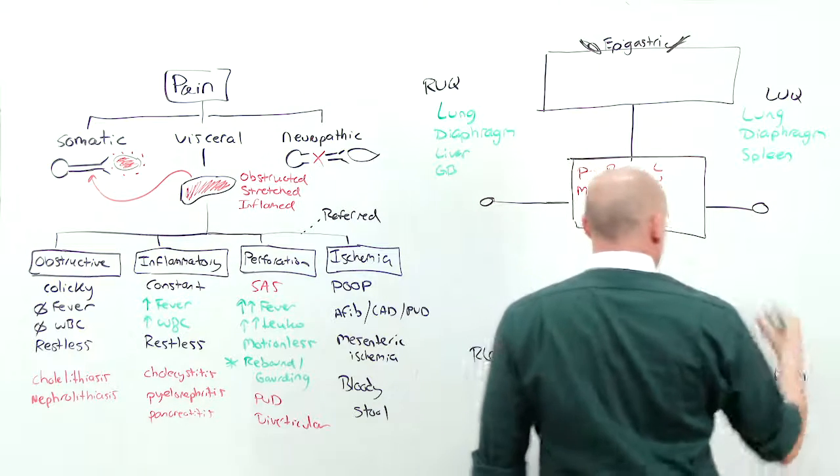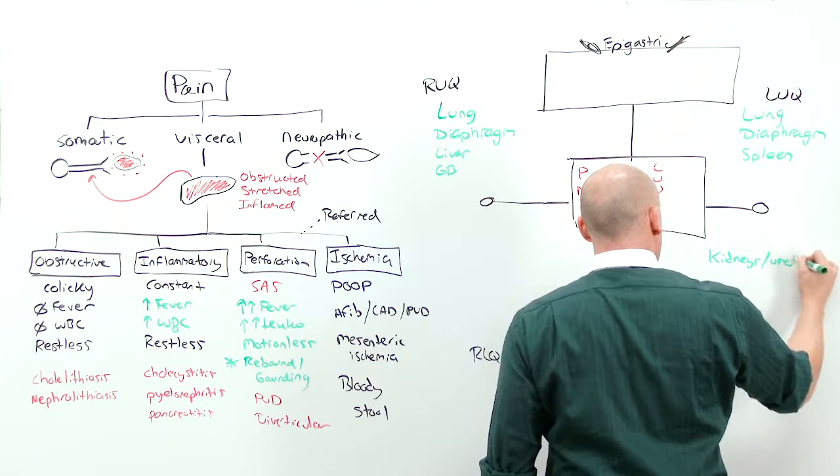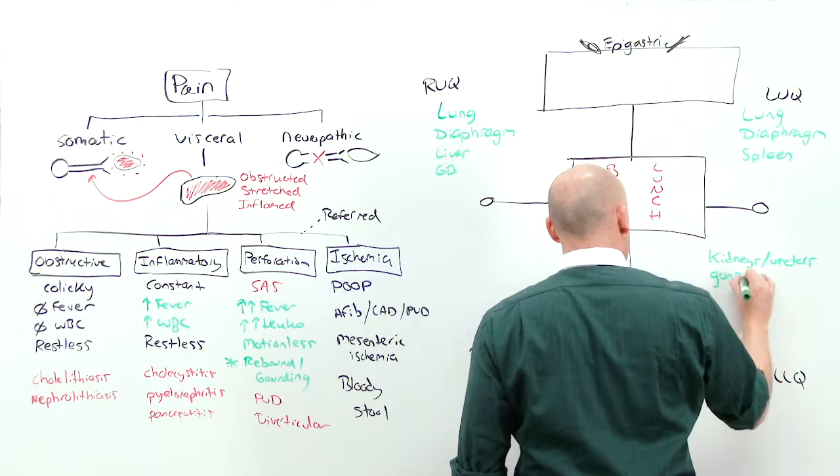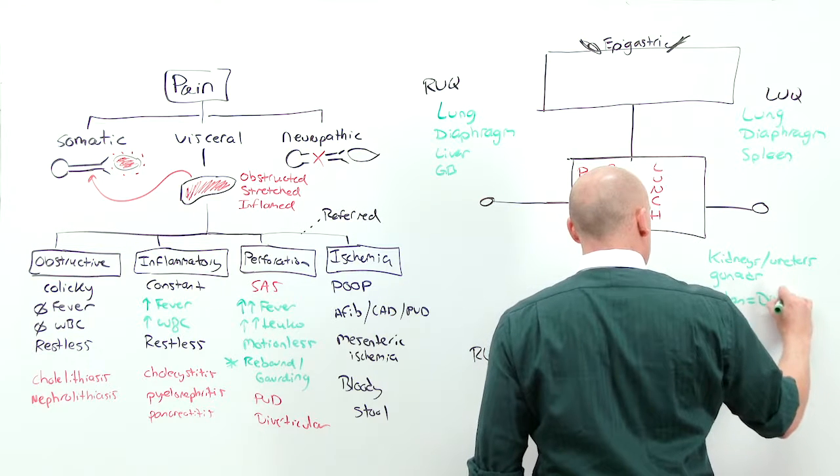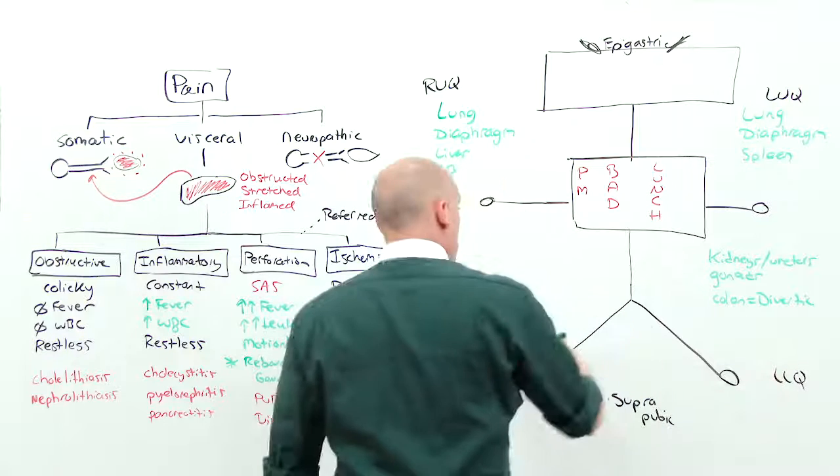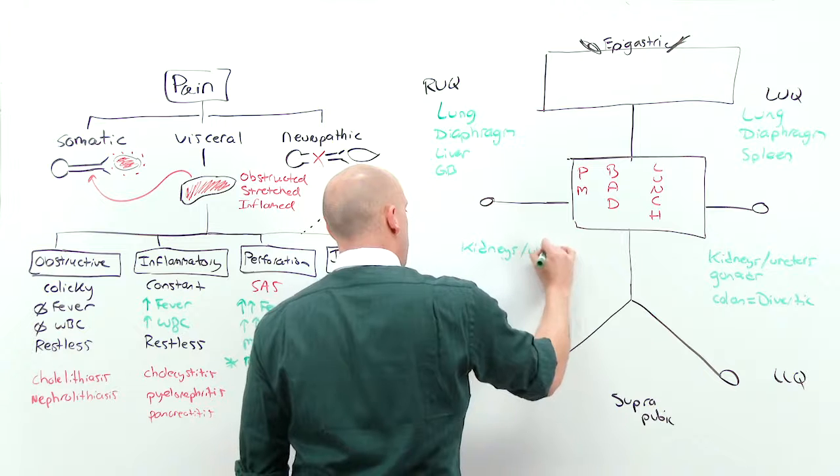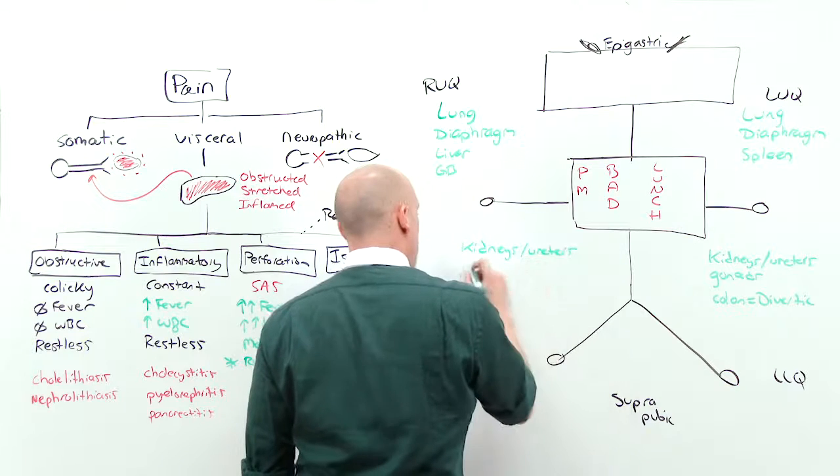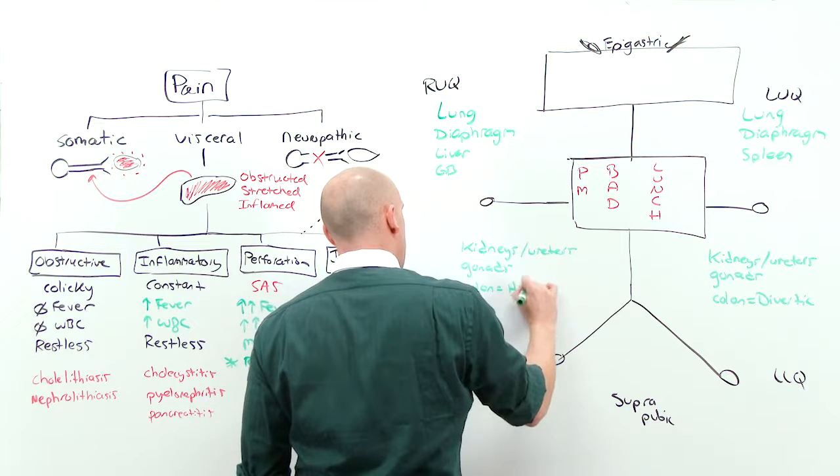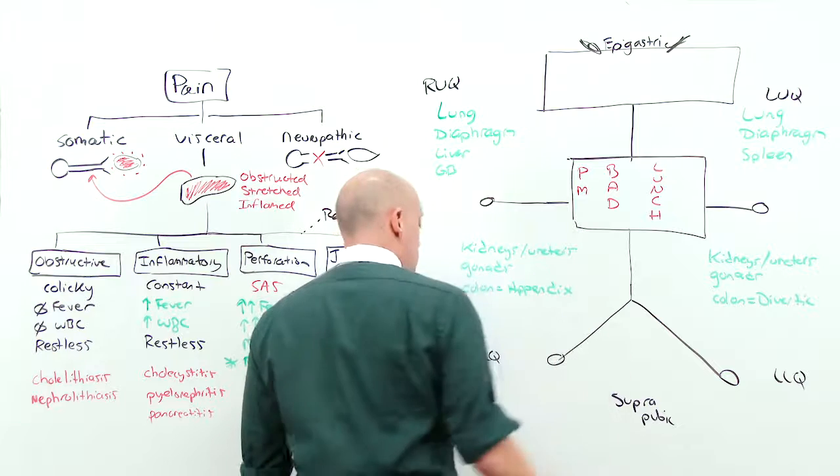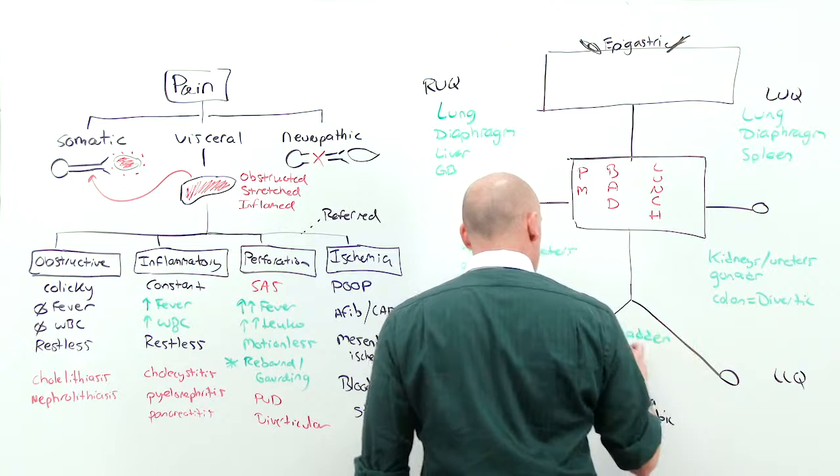In the lower quadrant, we have kidneys and ureters, the gonads, and the colon. And the colon on the left is going to be diverticulitis. Mirror that on the right, kidneys and ureters, gonads, and colon. And colon on the right is appendicitis. Between the legs, you've got a bladder. And for females, a uterus.